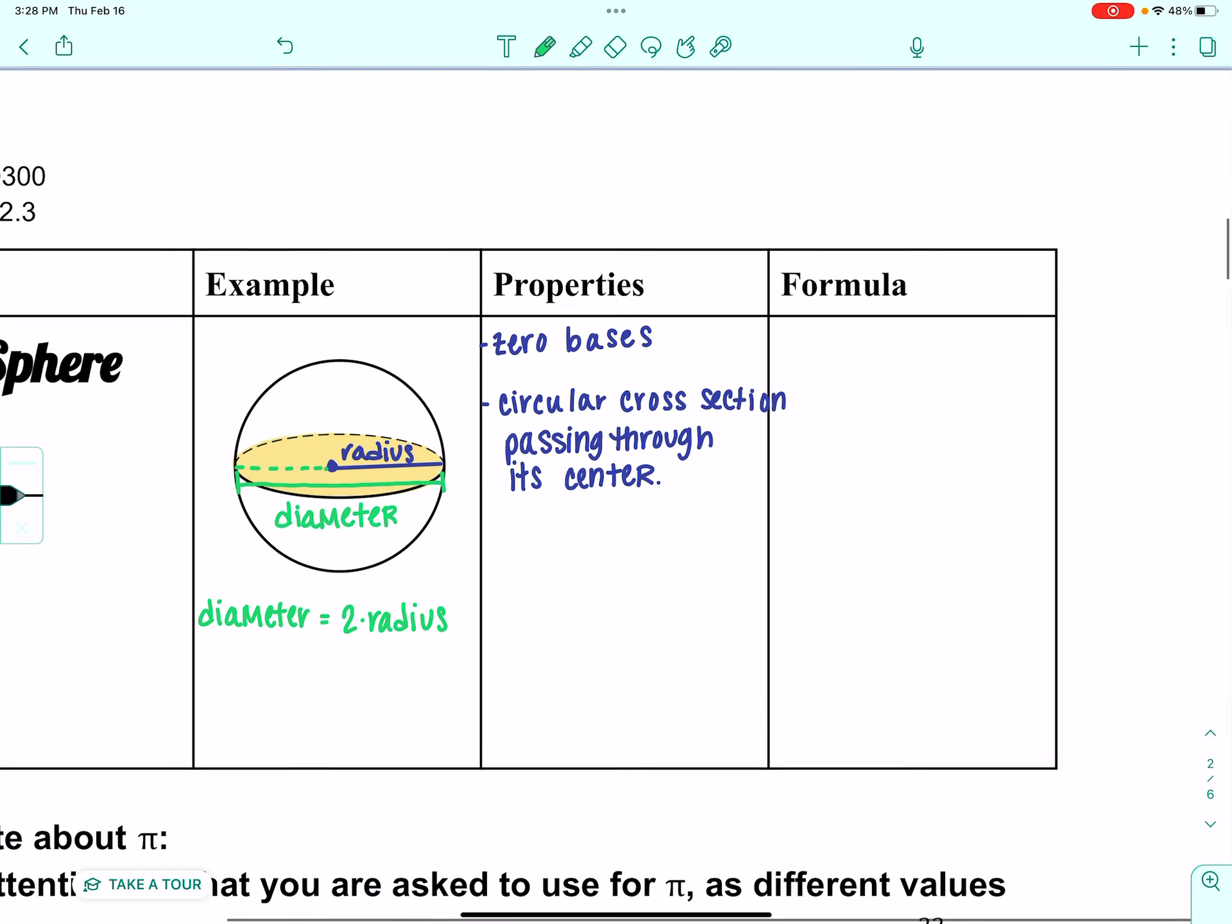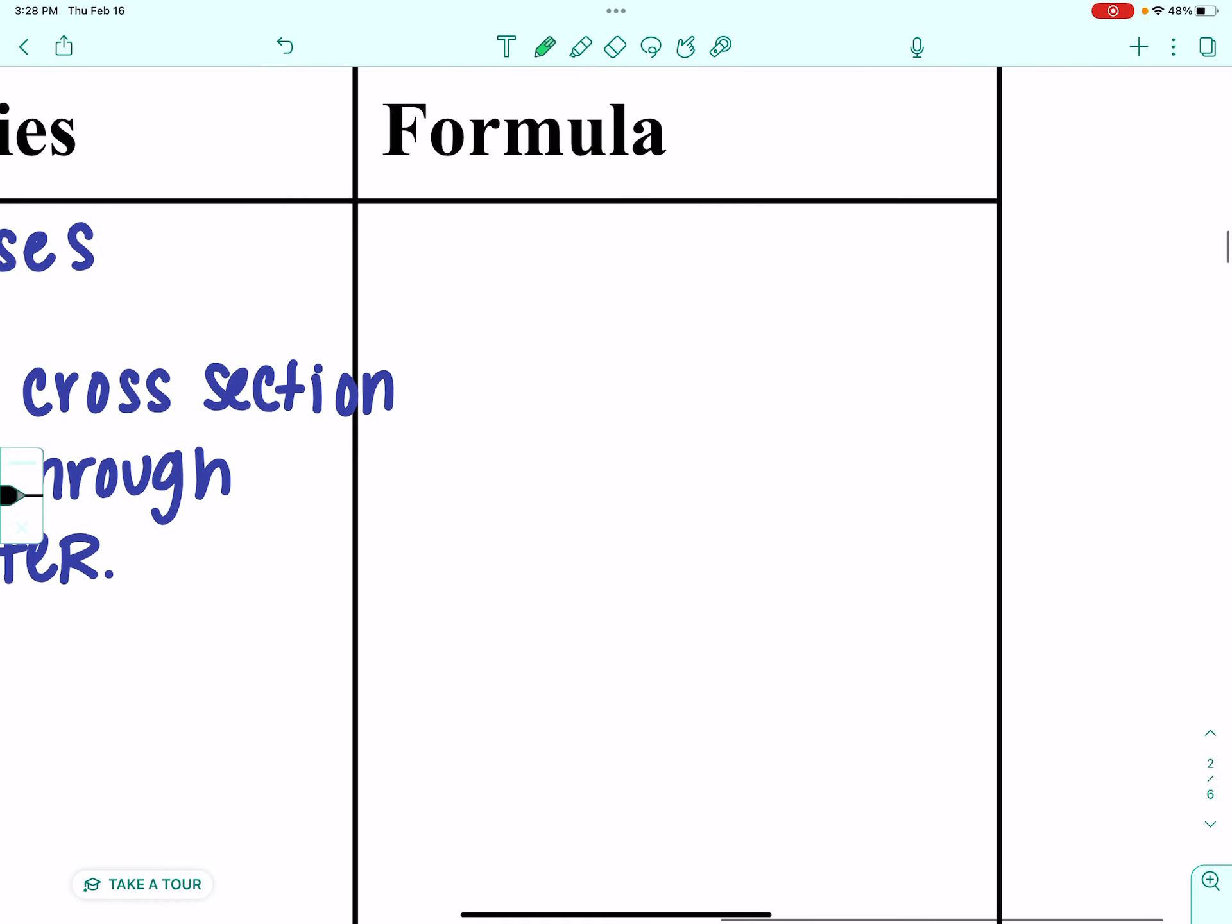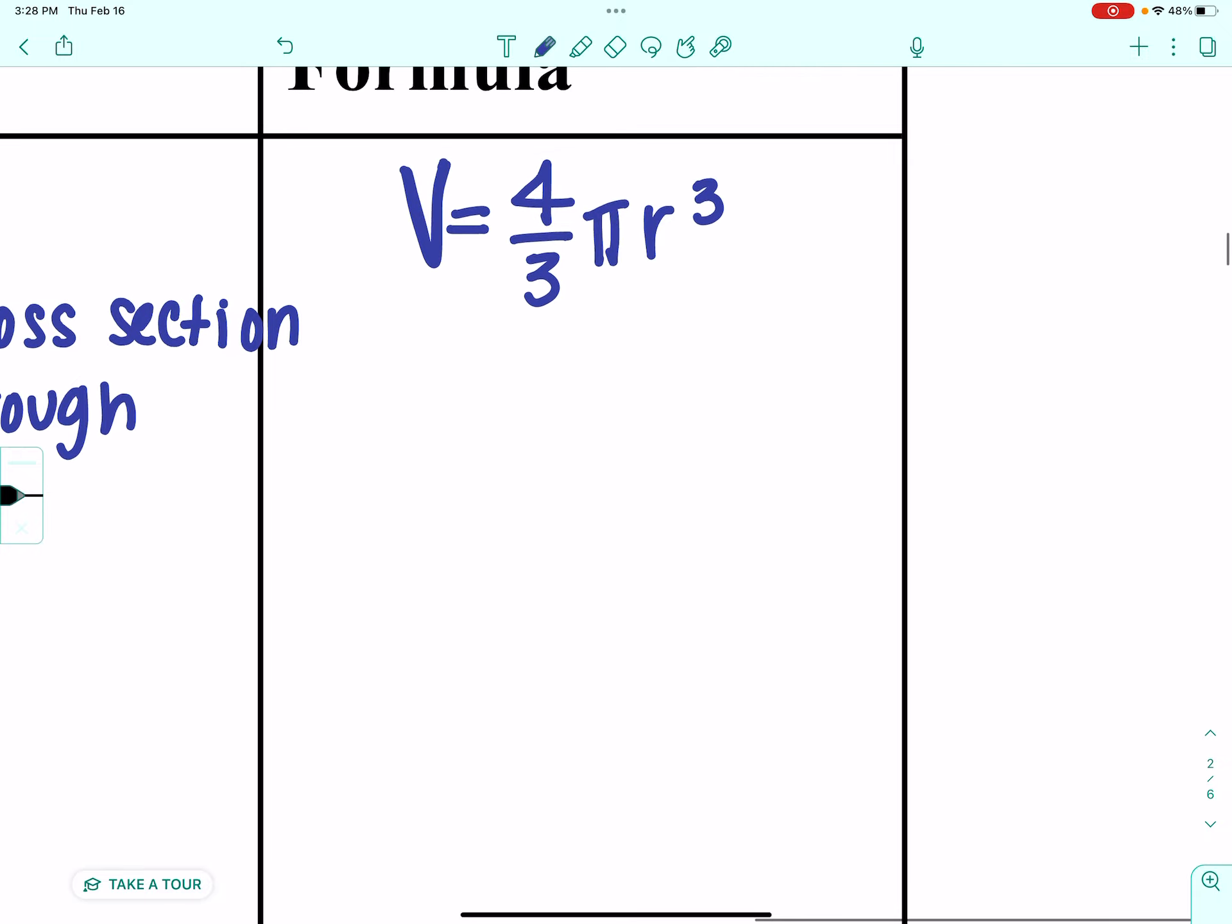Now, you're getting a two-for-one deal here because we are going to talk about two formulas for the sphere. I can hear your squeals of excitement through the internet. We're going to look at the volume of the sphere just like we did with anything else. The volume of the sphere is four-thirds pi r cubed. All you need is a radius. This would be the amount of air it takes to inflate a basketball.